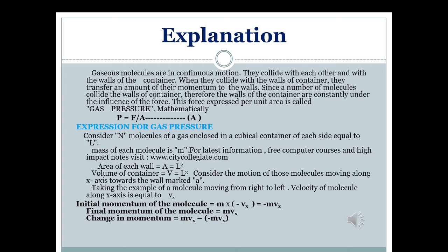Now we discuss the derivation of kinetic molecular theory of gases. According to kinetic theory, the molecules of the gas are continuously in random motion. They collide with each other and with the walls of the container. During this collision they exert force on the walls of the container. This force per unit area of the walls of the container is known as the pressure of the gas, giving us P = F over A.